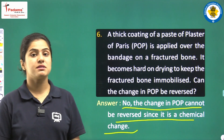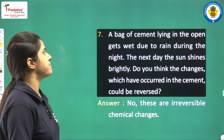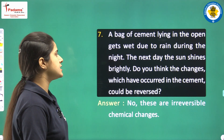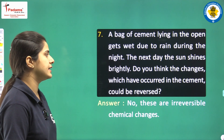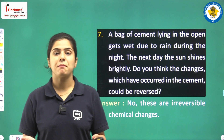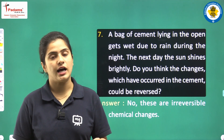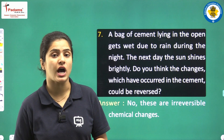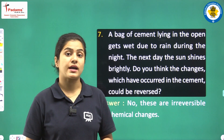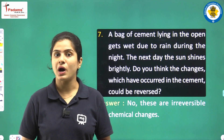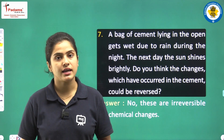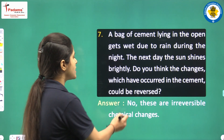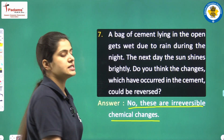Question number 7: a bag of cement lying in the open gets wet due to rain during the night. The next day, the sun shines brightly. Do you think the changes which have occurred in the cement could be reversed? Koi cement ka bag tha jise hum ne raat bhar choda, barish hui jis wajah se wo geela ho gaya. Uske baad dhoop nikli toh wo jam gaya. The answer is no — hum is change ko reverse back nahi kar sakte because cement ab solid form le chuka hai. These are irreversible chemical changes.